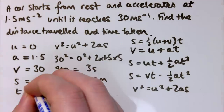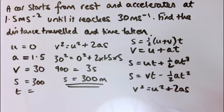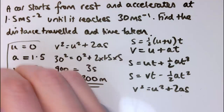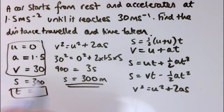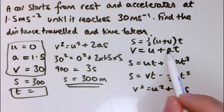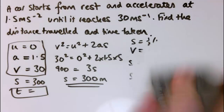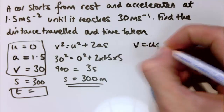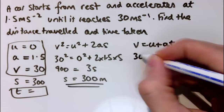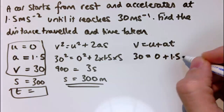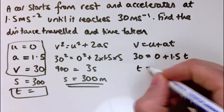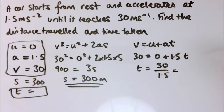I've now got s equals 300, so I have a choice of equations to find t, but I'd generally prefer to use the one with u, a, v, and t in it — just in case I made a mistake with s. That equation is v equals u plus at. Substituting: 30 equals 0 plus 1.5t, so t equals 30 divided by 1.5, which gives 20 seconds.